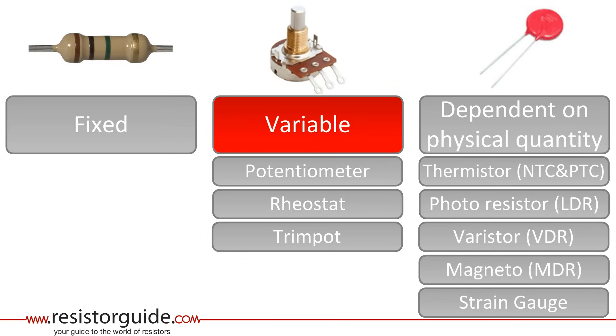Variable resistors have an adjustable resistance value. Most variable resistors are adjusted by mechanical movement. When they are used as a variable voltage divider, they are called potentiometers. When they are used as variable resistance to control the current in a circuit, they are called rheostats. Digital potentiometers are controlled electronically instead of by mechanical action.